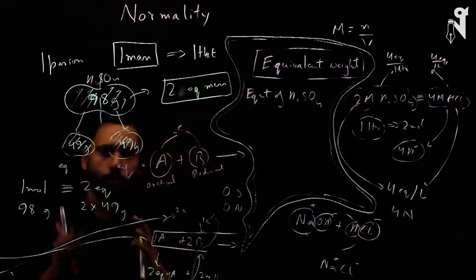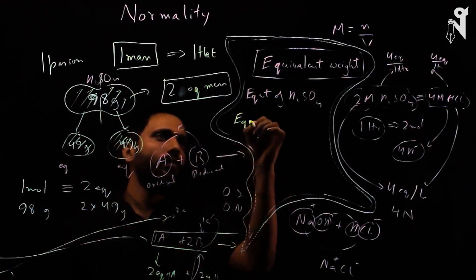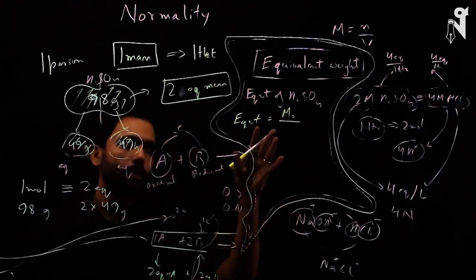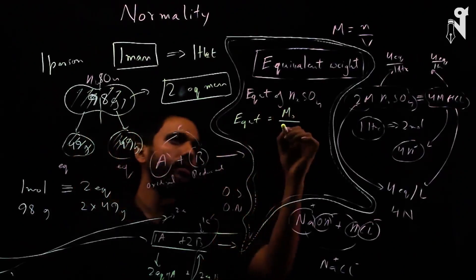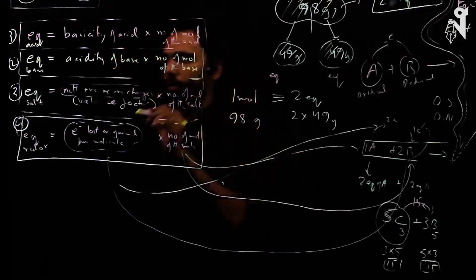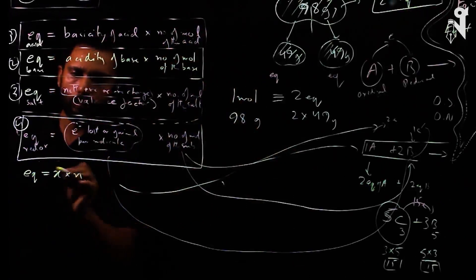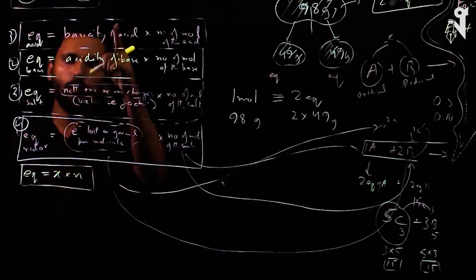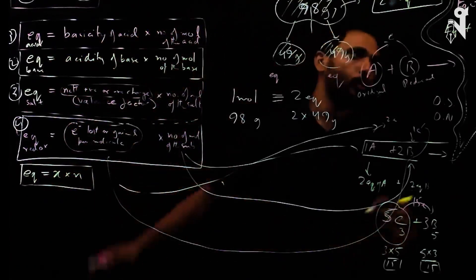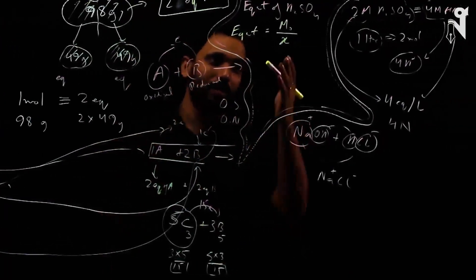The formula for equivalent weight is: equivalent weight = molar weight / X, where X is the valence factor. Equivalence = X × number of moles. For acids, X is the basicity; for bases, X is the acidity; for salts, X is the net charge. For HCl, X = 1; for H₂SO₄, X = 2; for H₃PO₄, X = 3.